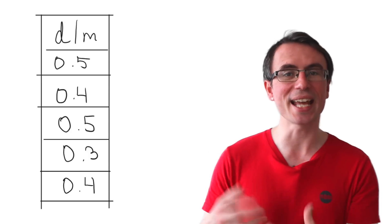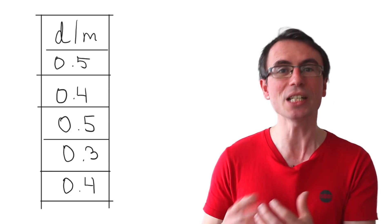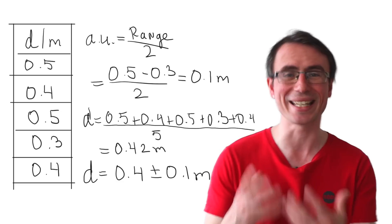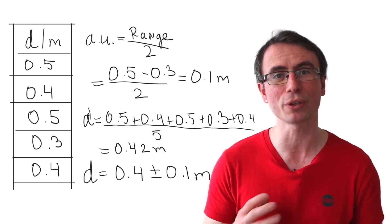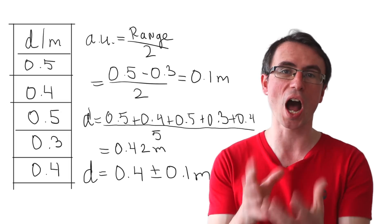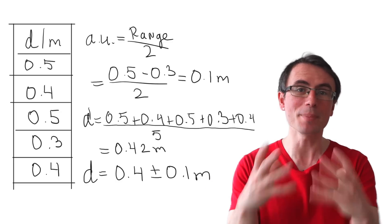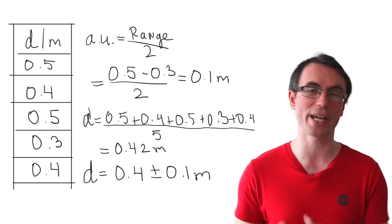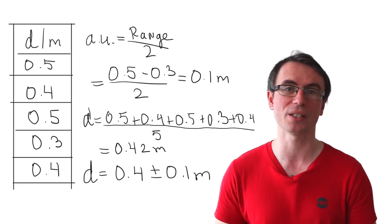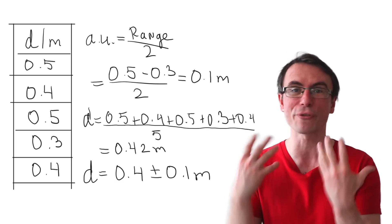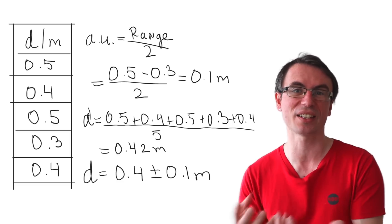To find the uncertainty in a data set, what we need to do is use the rule that the absolute uncertainty in that quantity is equal to half of the range. And we could represent the quantity by the mean value plus or minus half the range, which is the absolute uncertainty. If we needed to, we could also find the percentage uncertainty in that as well.